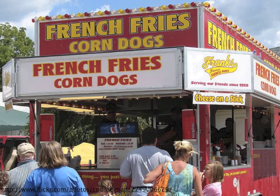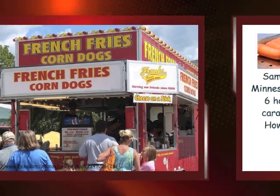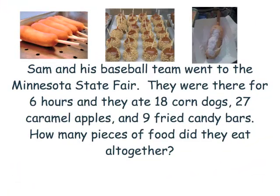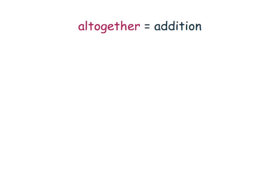We bumped into Sam and his baseball team at the corn dog stand. Sam told us that together they ate 18 corn dogs, 27 caramel apples, and 9 fried candy bars. Can eSpark viewers help me figure out how many pieces of food the team ate all together? Step one is to figure out what math operation is being used. The word 'all together' means the same as addition, so we have an addition problem.